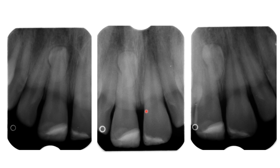What we do here is take another radiograph, but change the direction of the beam. The beam in the first image was taken with correct horizontal and vertical angulation. Now we take a new sensor or film, keep the same vertical angulation — which affects whether the tooth appears elongated or shortened — but we change the horizontal angulation, changing the direction from which the x-ray is coming.